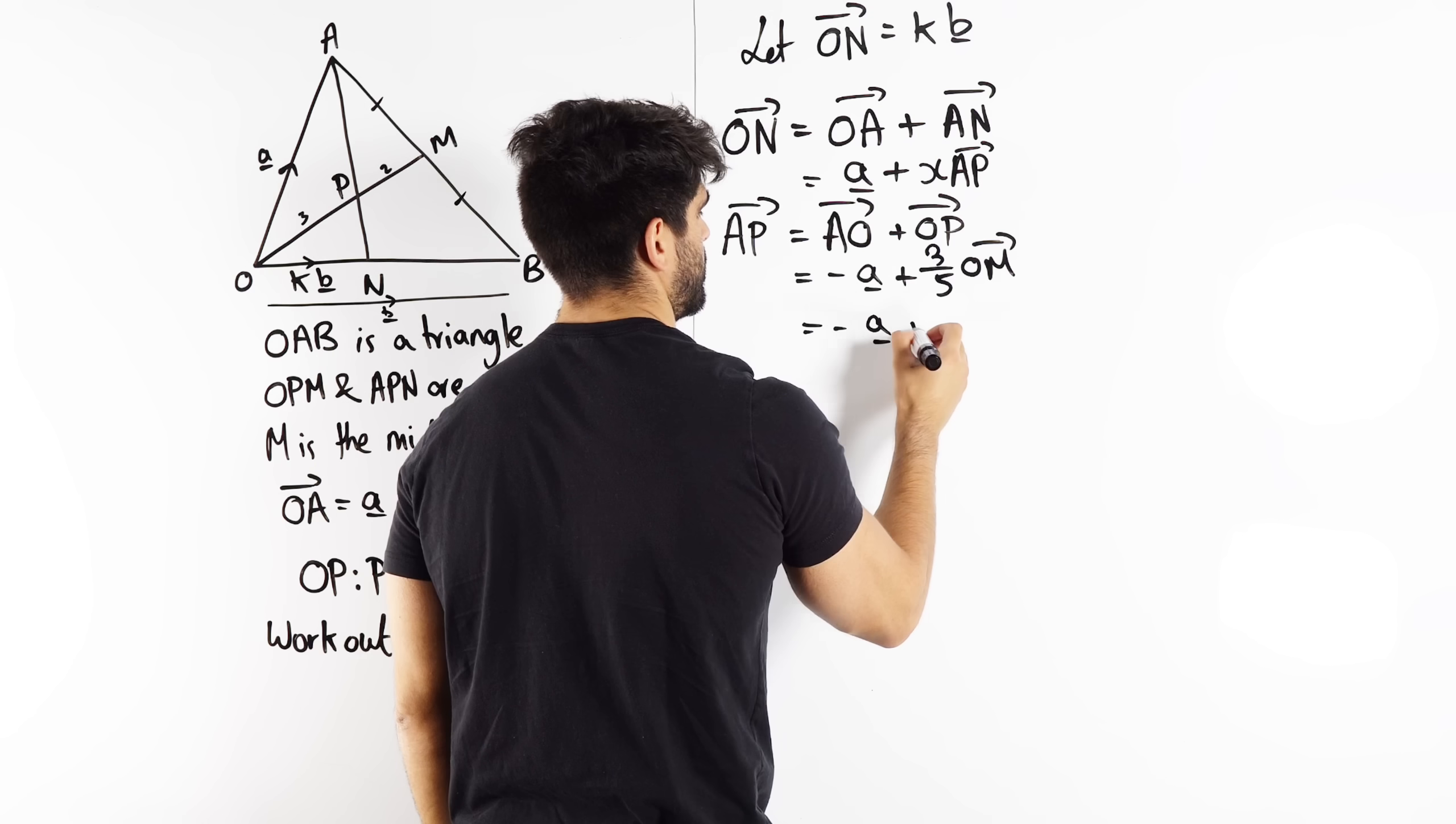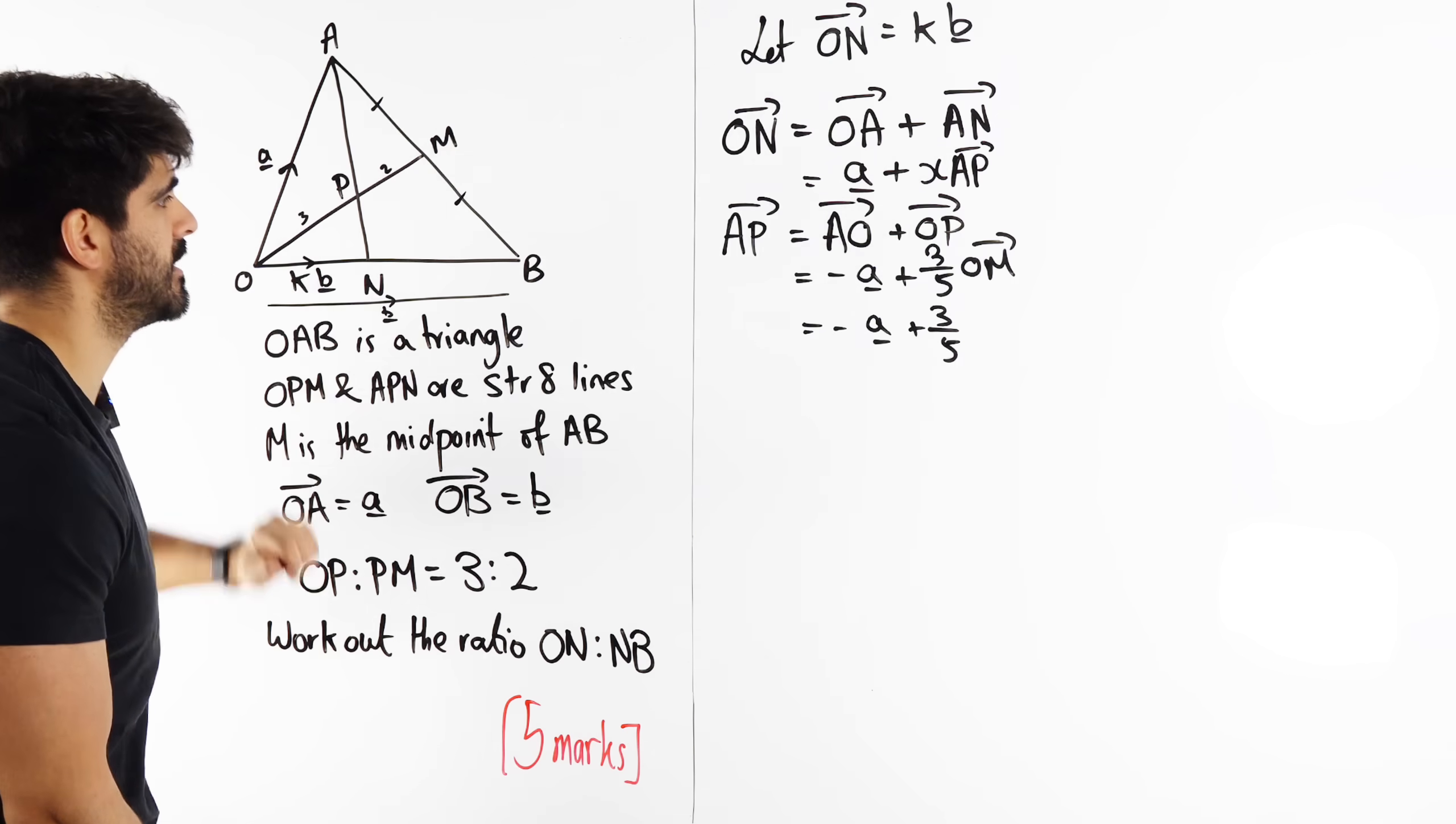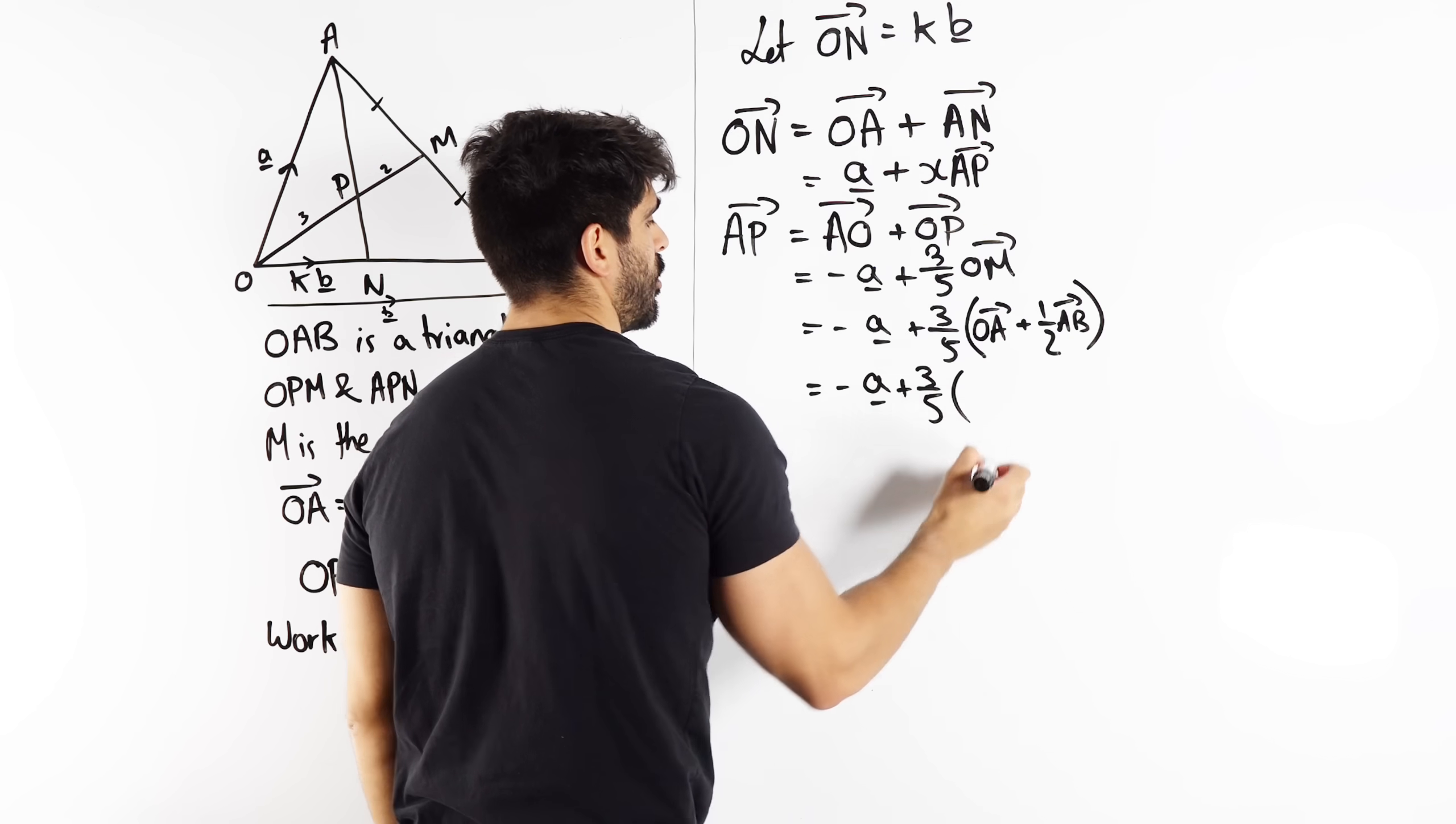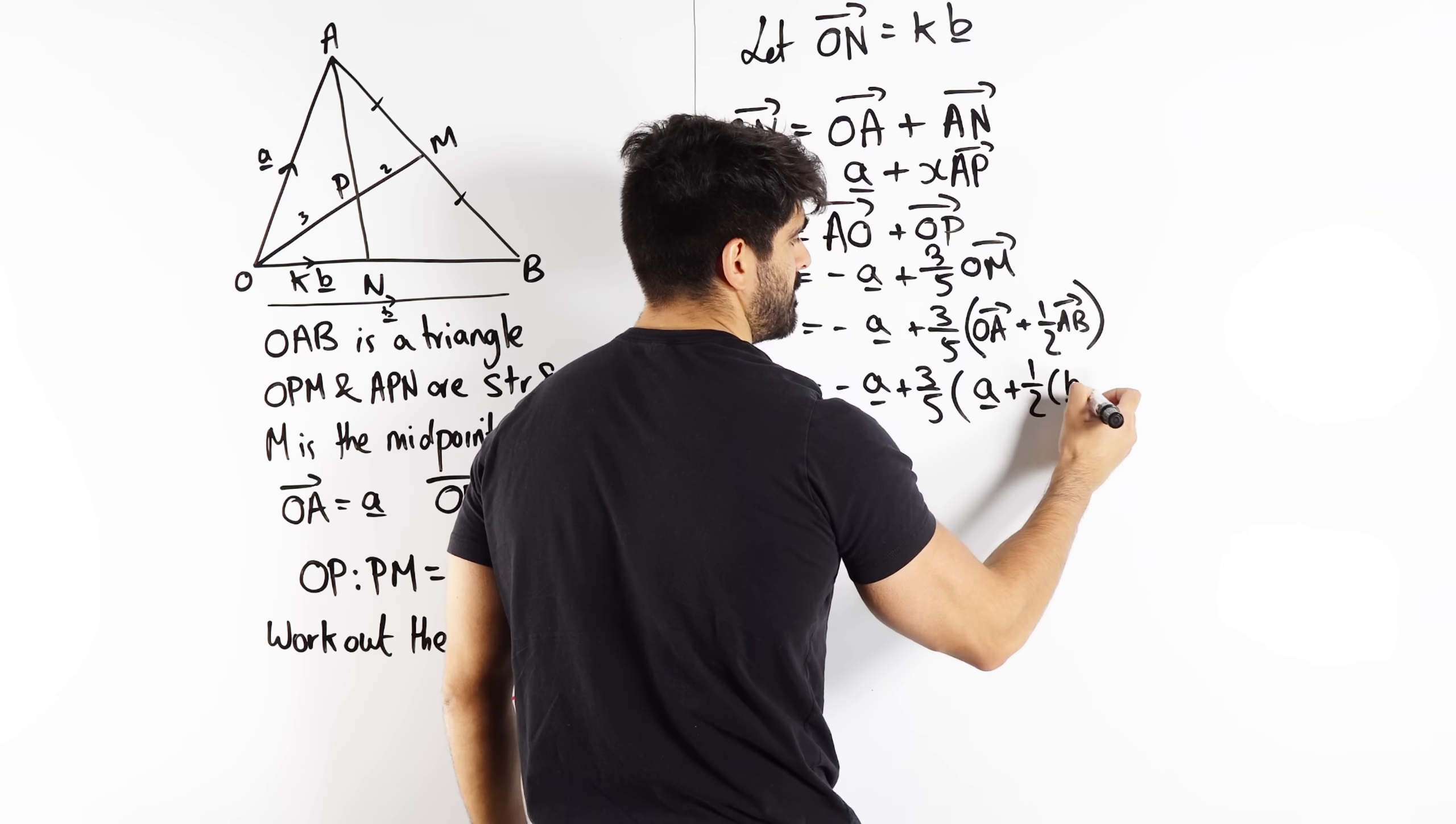So now we have to work out OM. How do I go from O to M? Well, to go from O to M, I need to go OA and then half of AB, because M is in the middle. So I'm going to go OA plus half of AB. So we're doing three fifths of OA plus half of AB. So minus A plus three fifths of O to A is A, plus a half of A to B. Now how do I go from A to B? I go minus A plus B, or B minus A. So we're doing a half of B minus A.